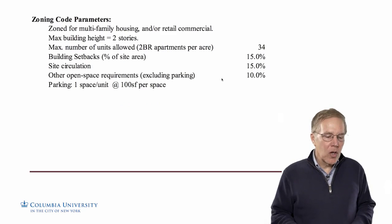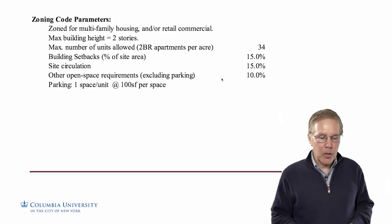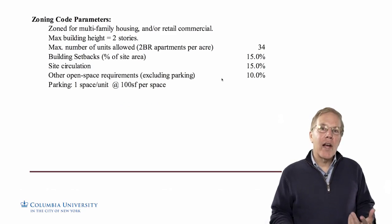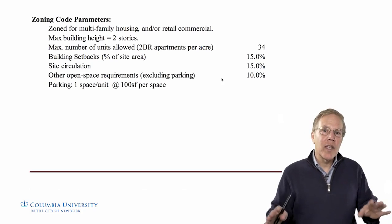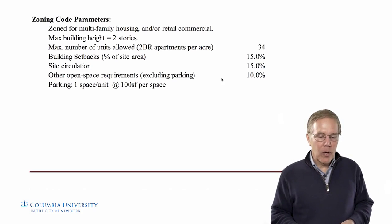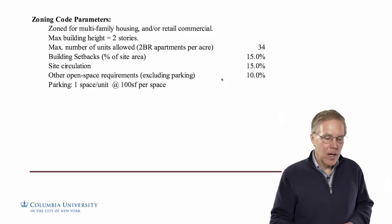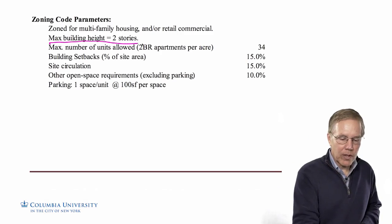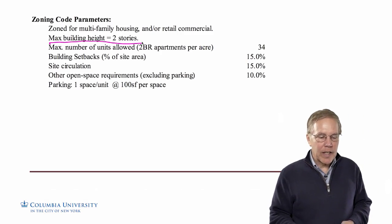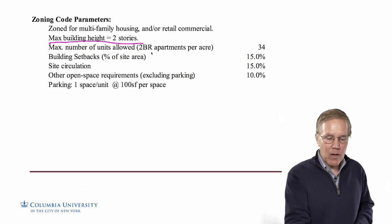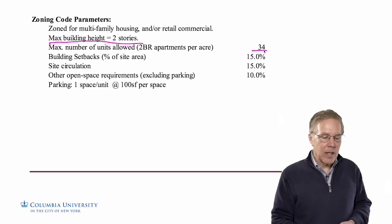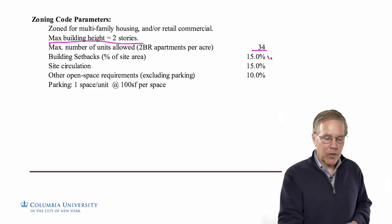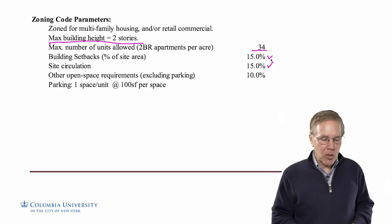We also have more on the local zoning that CAG needs to be familiar with. This area is zoned for multifamily housing and/or retail and commercial, so they don't need any kind of zoning exception. The maximum building height is two stories — that's where our two-story assumption came from. The maximum number of units allowed for two-bedroom apartments per acre is 34. Additionally, they need about 15% of the site area for setbacks and 15% for site circulation outside the building.